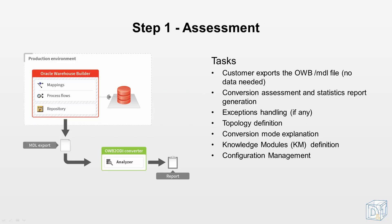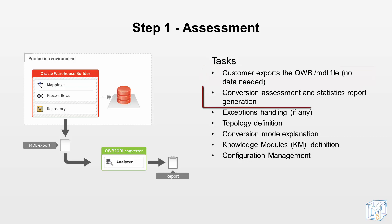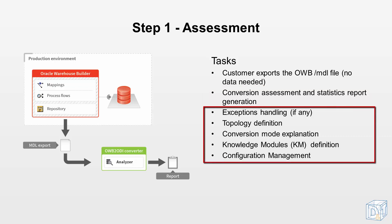The first step in the conversion process is the assessment step. During this step, we define the project's framework, we evaluate the consistency of the OWB project, and we define the conversion criteria. We need you to provide us with an exported OWB MDL file, and based on that file, a conversion report will be generated. Next, during an assessment meeting, we will discuss the outcome of this analysis with you. The aim of the meeting is to decide together with you how exceptions will be managed — using a workaround or by converting them manually.